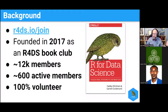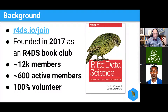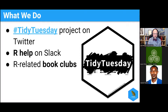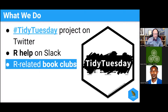We're 100% volunteer. We have people on the Slack answering questions — that's the R help aspect. You might also know us for the Tidy Tuesday project on Twitter. Every week we post a clean, open, free dataset for people to experiment with and learn about data science. And then we have our related book clubs, and that's what I'm here to talk about today.